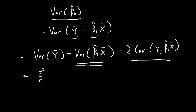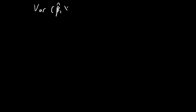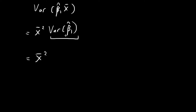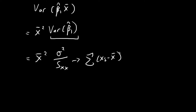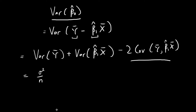Next, let's focus on the variance of β₁̂ times the sample mean of x. The sample mean of x is just a constant, so I can pull it out and square it — remember to always square the constant when pulling it outside a variance. Then we have the variance of β₁̂, which we found from the last video: Var(β₁̂) = σ²/Sxx, where Sxx = Σ(xᵢ - x̄)². So this variance term equals σ² · x̄² / Sxx.